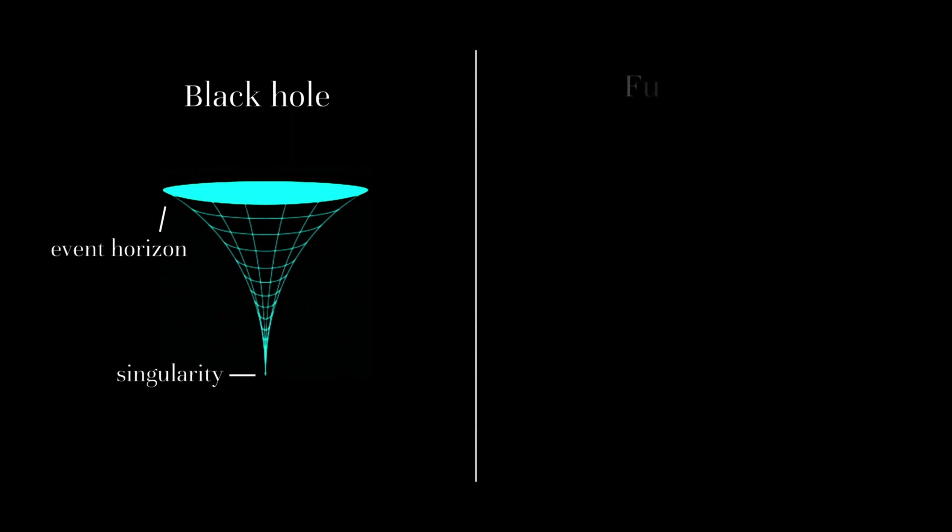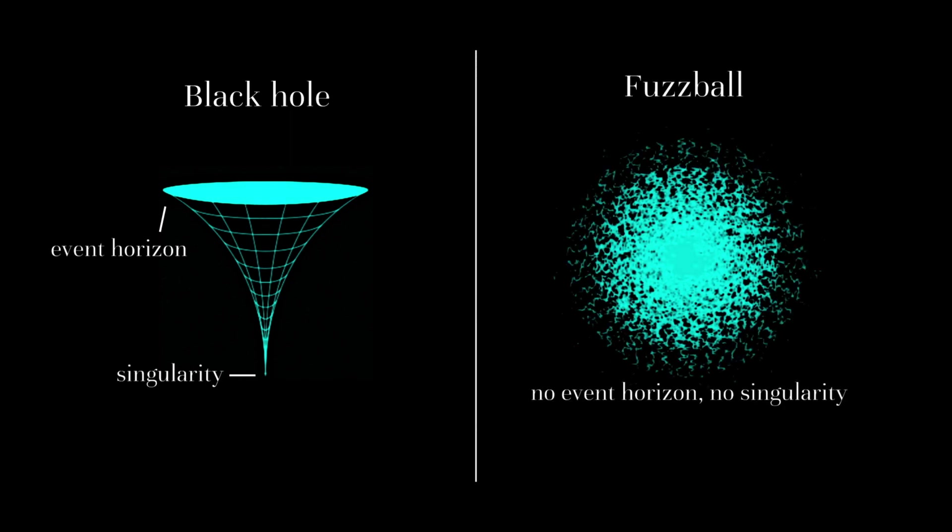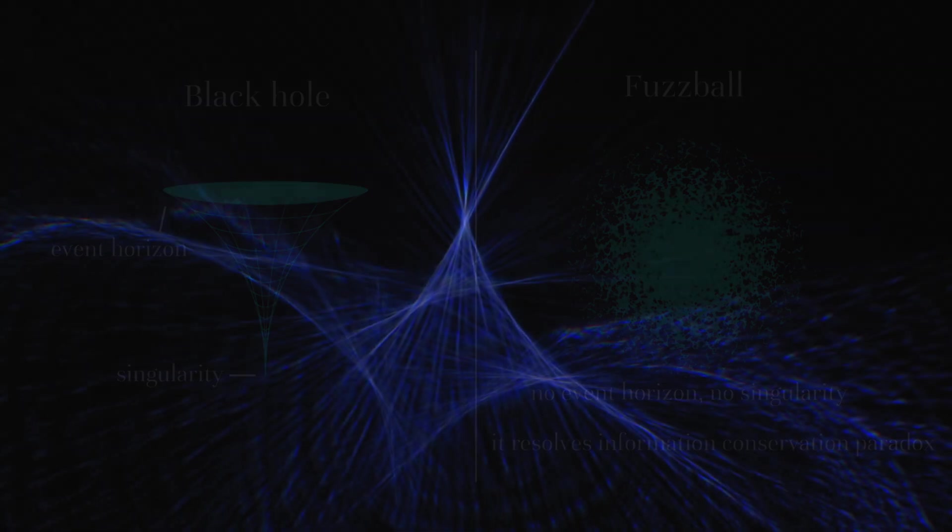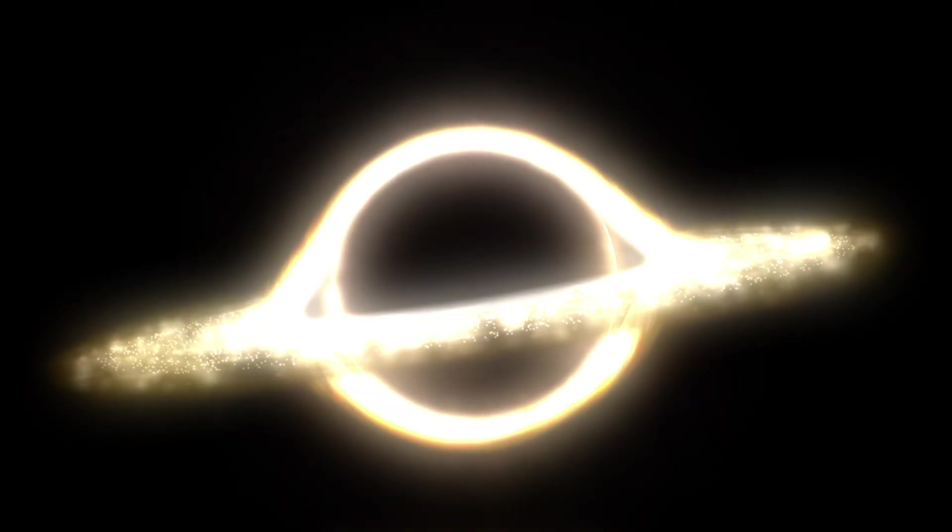But in string theory, everything is made of tiny one-dimensional vibrating strings that create quarks, electrons, and atoms. This theory suggests that black holes could be fuzz balls without singularities or sharp horizons. If string theory is true, it resolves the information conservation paradox as instead of collapsing all of the black hole's mass into a single point, it gets distributed around the ring-like structure of these strings.